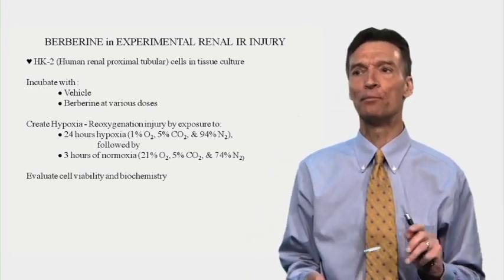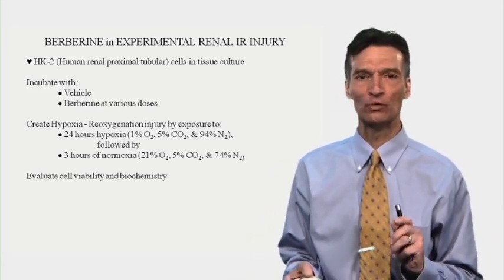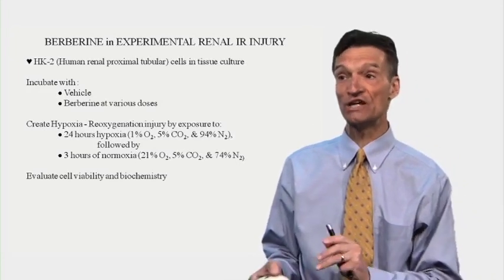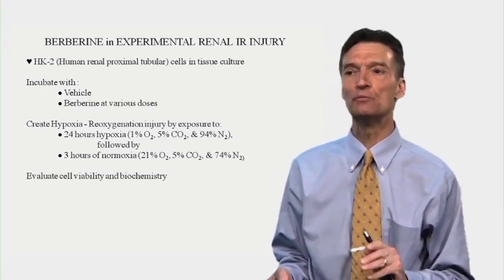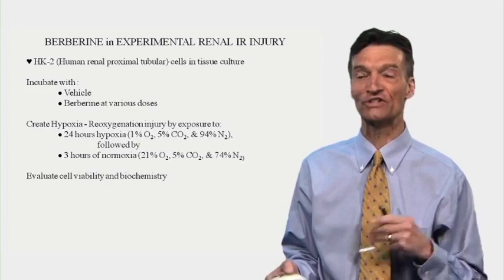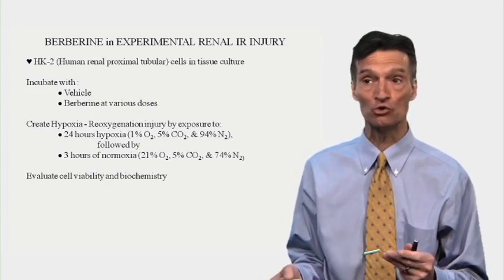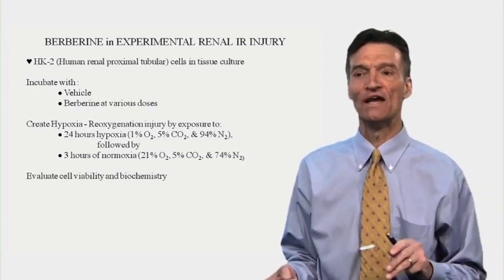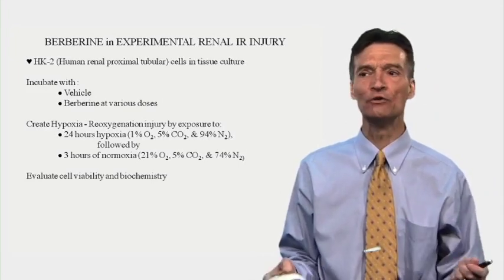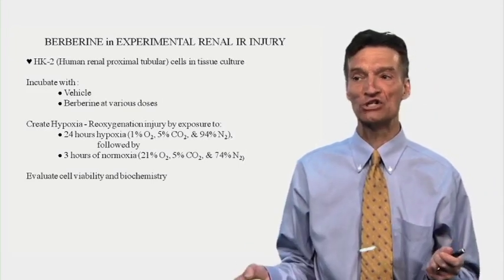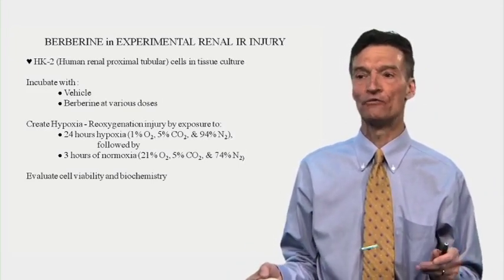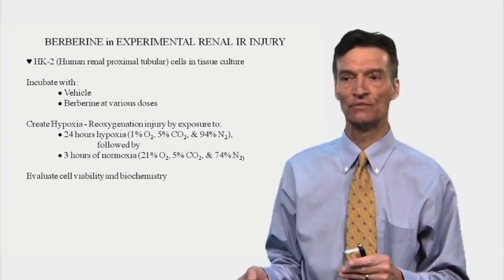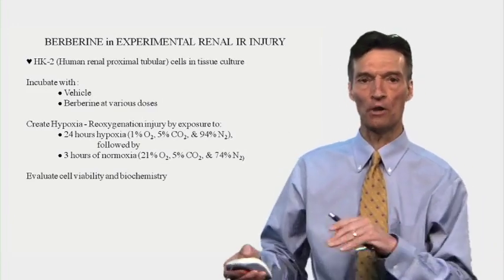Now let's talk about berberine in experimental renal ischemia-reoxygenation injury. We're going to take human renal proximal tubular cells — kidney cells — in tissue culture. We're going to incubate them with vehicle or berberine at various doses, then create hypoxia-reoxygenation injury by exposing them for 24 hours to 1% oxygen, followed by 3 hours of normal oxygen.